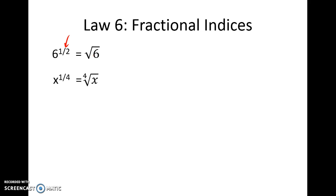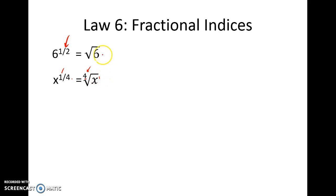We can extend that a little bit and say if we've got something to the power quarter — in this case it's x — it can be rewritten as the fourth root of x. Notice here that the denominator actually comes across and sits itself in front to tell us which root it is; in this case it's a fourth root. The numerator of our index comes across and parks itself there. Typically we don't show it if it's an index of one, but it's there all the same.